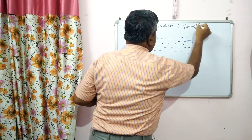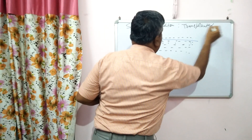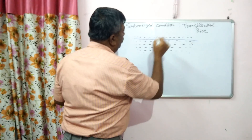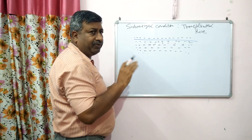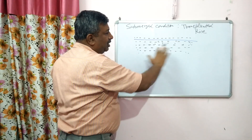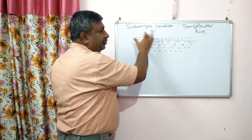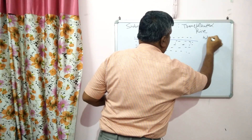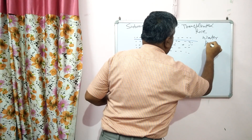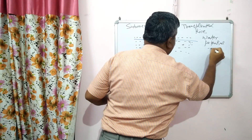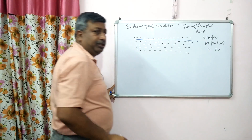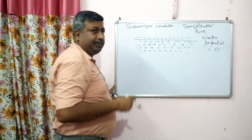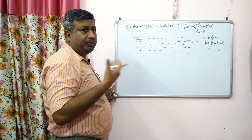This topic is commonly asked in examinations: nitrogen transformation in a transplanted rice field. With puddling and water present, all pores — whether micro or macro — are filled with water. At this time, water potential is zero, which is the maximum water potential under submerged condition.